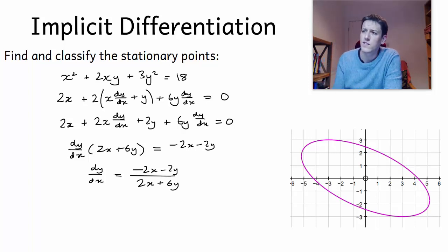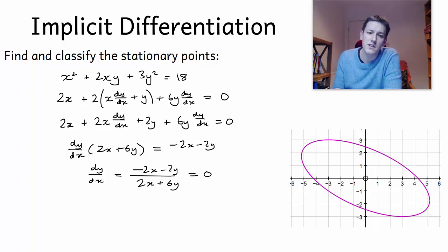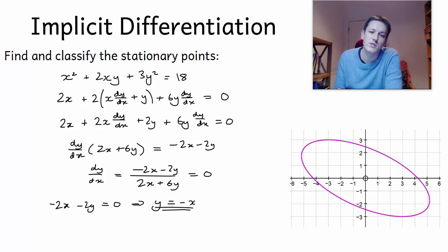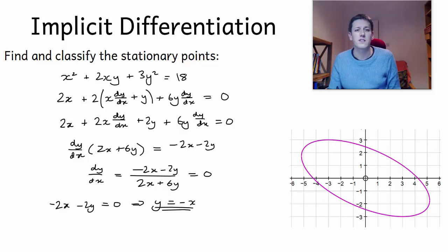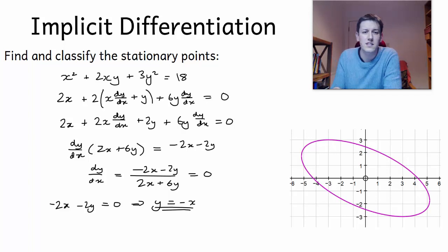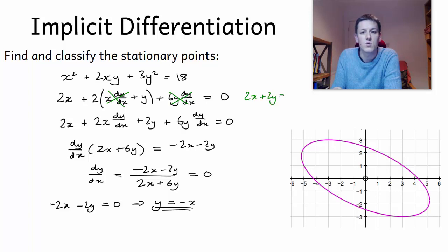So we've got that dy/dx equals (minus 2x minus 2y) divided by (2x plus 6y). Now if I want to find the stationary points, I want to know where dy/dx equals 0. To make this fraction equal to 0 I need to make the numerator equal to 0, so I'd have minus 2x minus 2y equals 0, giving y equals minus x. Actually, if we just want to find the stationary points without finding an explicit formula for dy/dx, we can go back to an earlier step and set the dy/dx terms to zero, arriving directly at 2x plus 2y equals 0, which gives y equals minus x more directly.